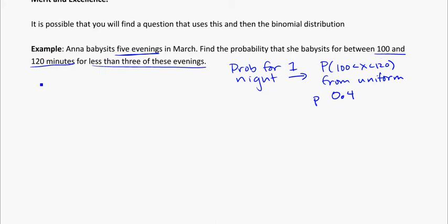So we know for one night, she's got a probability of 0.4 to babysit between 100 and 120 minutes. Now, here's the catch. We're looking at five nights. So for five nights, we can think that each night she's got a probability of 0.4, assuming that it's constant for all nights. The number of trials total is going to be five.